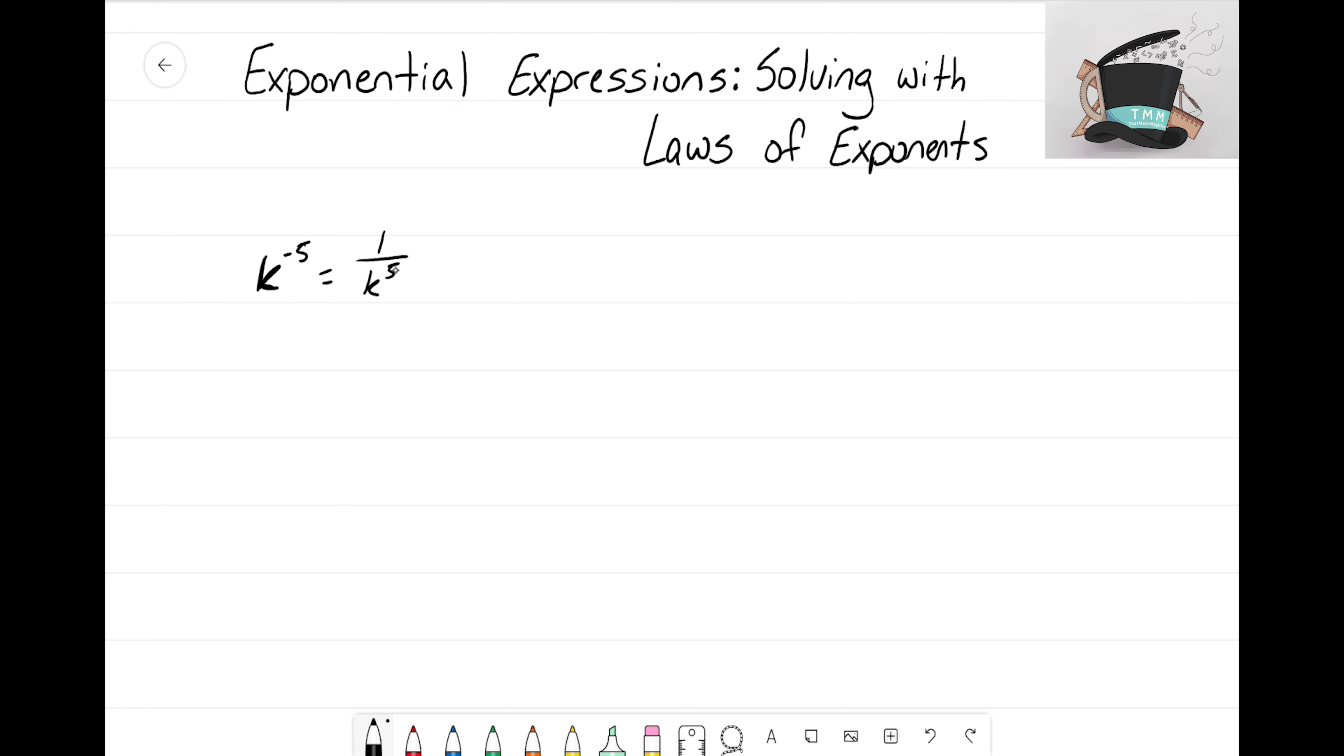a 1 and then the exponent changes. Let's look at another example: what if we had x to the negative 2 times x to the fifth power? That looks exactly like our first law of exponents, which says that when exponents are being multiplied, we just have to add our exponents.